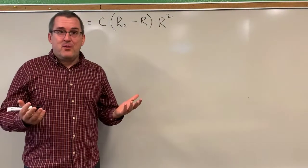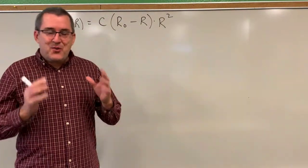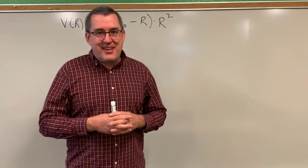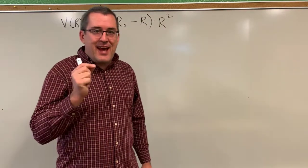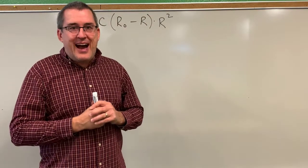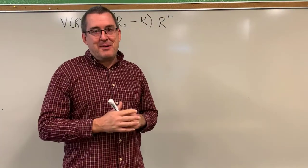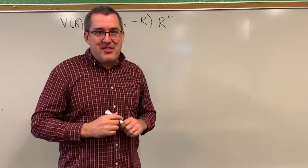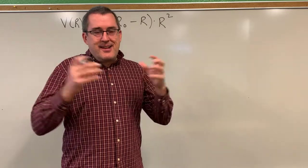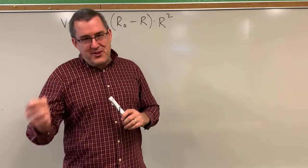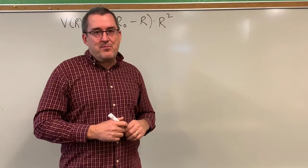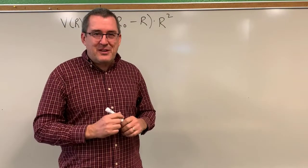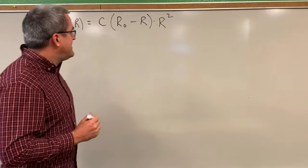We've explored on Desmos this relationship between the radius of the trachea at rest and the radius of the trachea during a cough, to see at what relationship between those two radii we see the maximum velocity. Maybe you could go on Desmos and play around with that too and look for that connection. But now we're going to explore that with traditional calculus techniques to see what that relationship was.